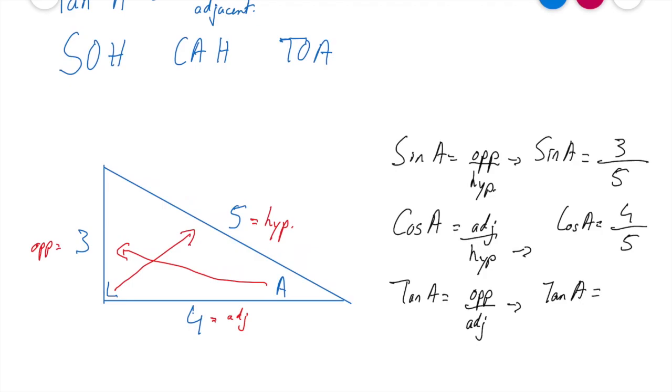So that becomes tan A over, well, what's my tan, what's my opposite and adjacent sides in that triangle? Well, my opposite is 3, my adjacent is 4. So therefore, my answer is going to be tan A equals 3 over 4.